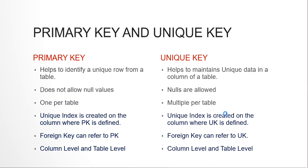First of all, a primary key helps us to identify a unique row from a column in our table. Whenever we have a table and we define a column as primary key, we are sure that whenever we query with reference to that primary key we would either get returned only one result or no result. For example, in the employees table of the HR schema that Oracle provides, the employee ID is the primary key. So whenever we write something like 'SELECT * FROM employees WHERE employee_id = 100', either one record will be returned or no record will be returned.